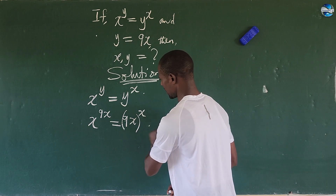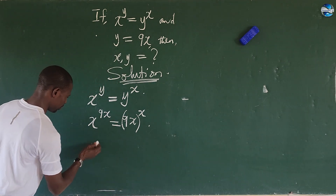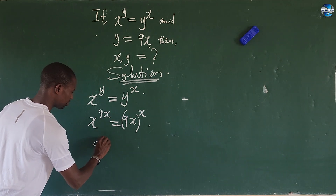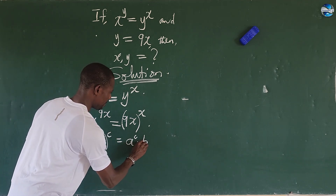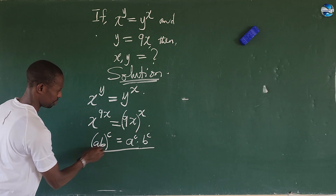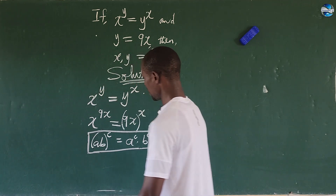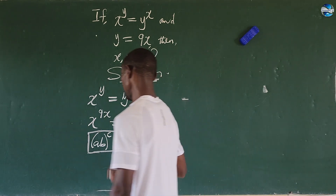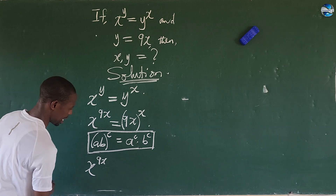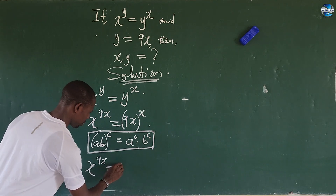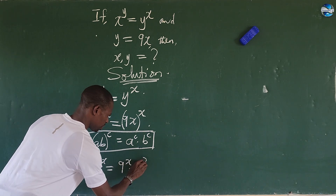Let's use the law of indices to expand this. Remember the law which says that if you have (a·b) to the power of c, this equals a to the power of c times b to the power of c. Applying this law of indices here, we expand the right-hand side: x to the power of 9x equals 9 to the power of x times x to the power of x.